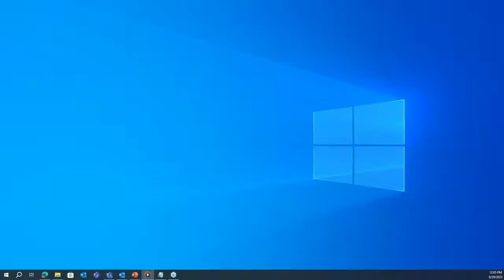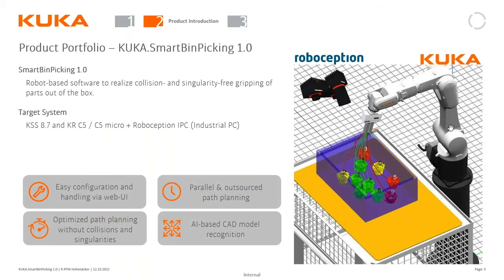When we look at what this solution actually consists of — it's a combination of KUKA doing the robot-side work, and we've partnered with Roboception, who have a lot of experience on the vision side for part recognition. This is a software solution that works with our newest line of robots. It only came out in November 2021, so just last fall. It works with KSS 8.7 and our KRC5 or C5 Micro, and the Roboception IPC — you need their industrial PC to run some of the software.